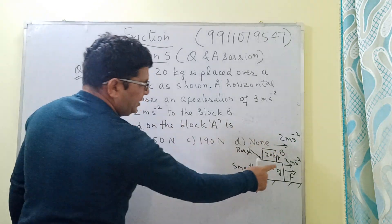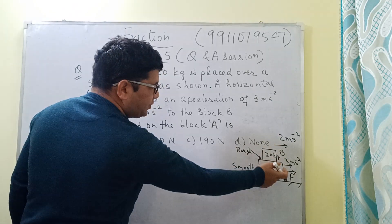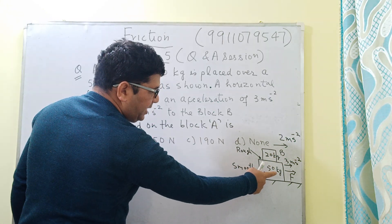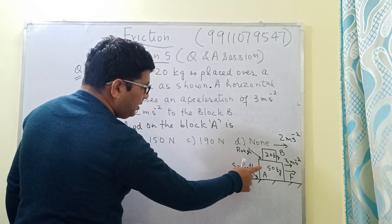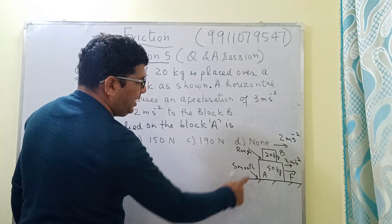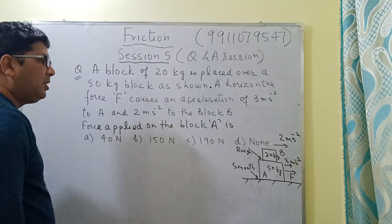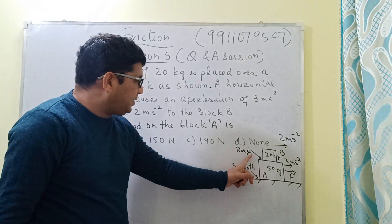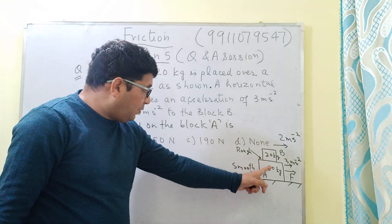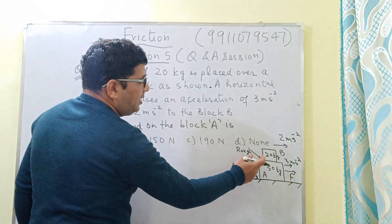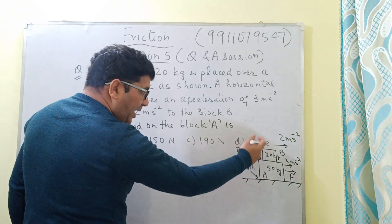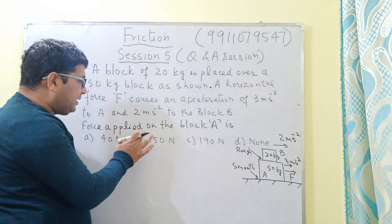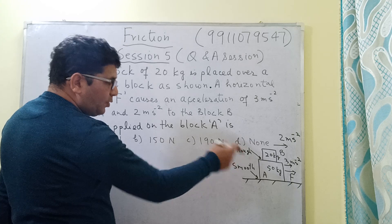The direction of motion is indicated by two arrows. The force is applied in this direction to block A, which is 50 kg. Because of this applied force, the acceleration developed in block A is 3 m/s² and in block B is 2 m/s². The bottom surface is smooth, so the coefficient of friction is zero there. The surface between the blocks is rough, so there will be some frictional force. We have to find the force applied on block A, and we will also find the force of friction.